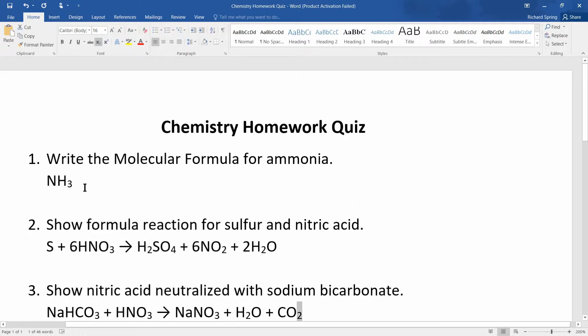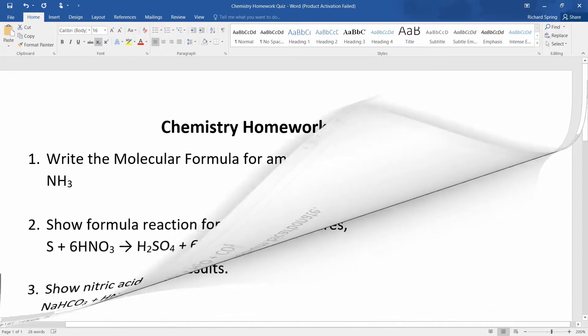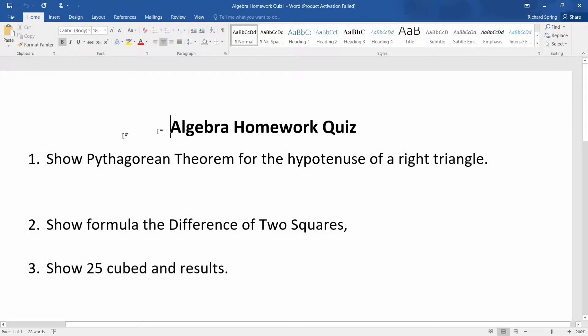Now let's take a look at the algebra homework quiz. Show Pythagorean Theorem for the hypotenuse of a right triangle. Oh, I remember that. Show formula for the difference of two squares. Show 25 cubed and the results. The kids did their magic and what happened?